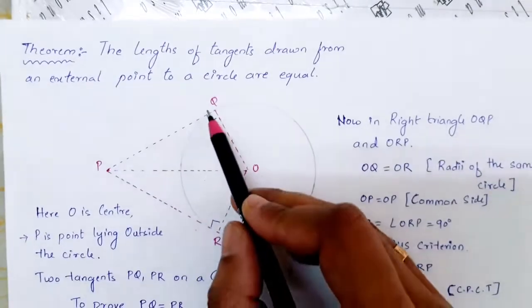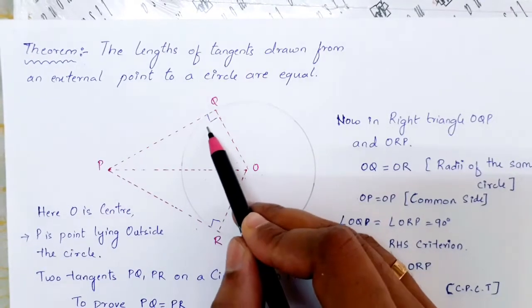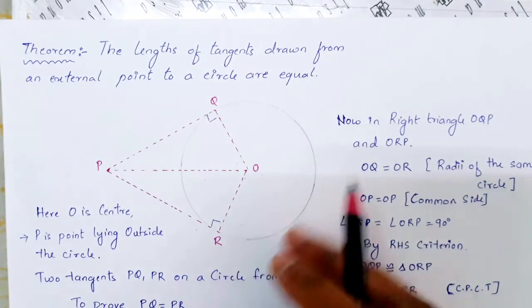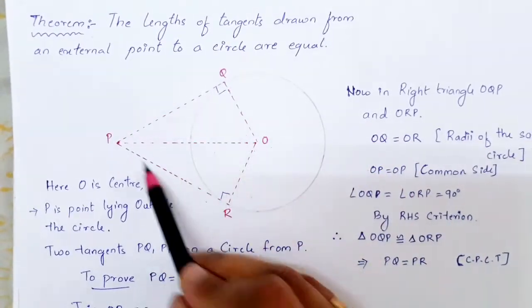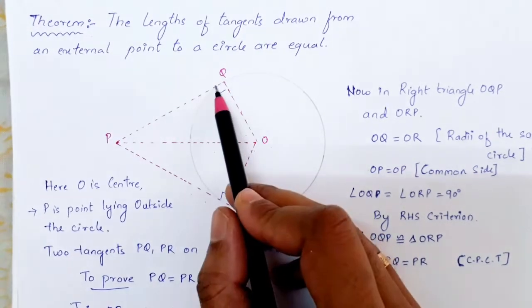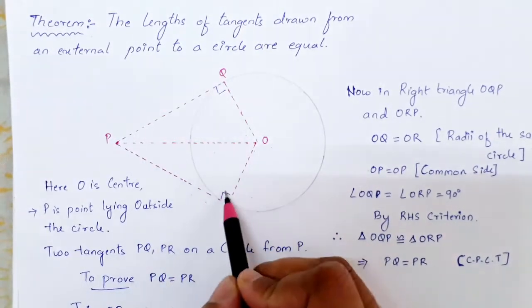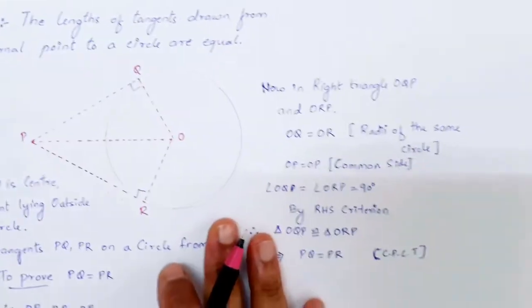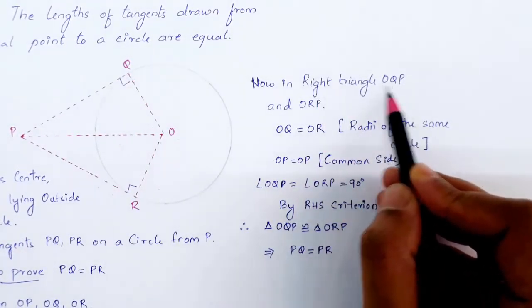Tangent and radius always make 90 degrees, so that's why angle Q and angle R will be 90. Now in order to show that PQ and PR are the same, we're going to show that triangle OQP and triangle ORP are congruent. So we're going to consider right triangle OQP and ORP.